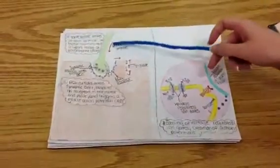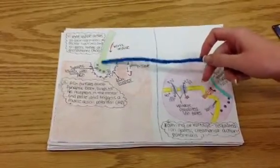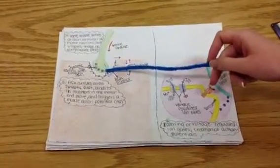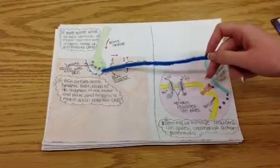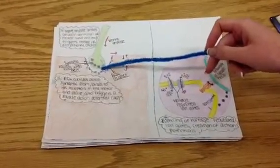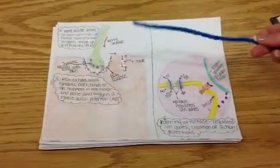Here we have the nerve impulse arriving at the axon terminal of the motor neuron and triggers the release of acetylcholine. The ACH diffuses across the synaptic cleft and binds to the receptors in the motor end plate and triggers a muscle action potential.